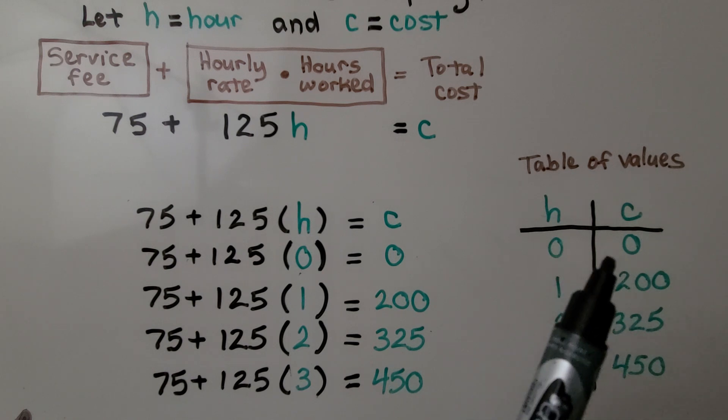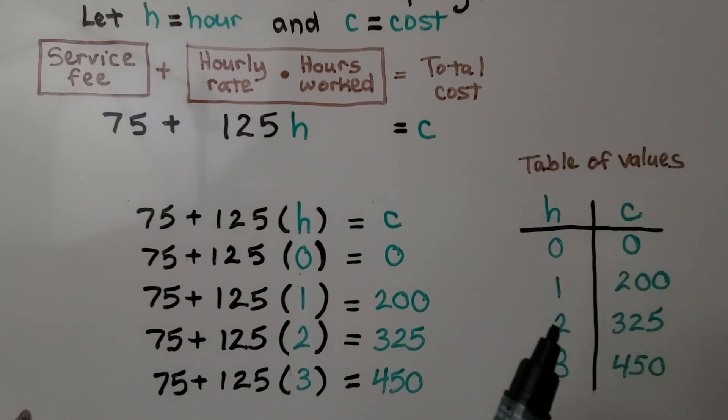If the hours are zero, the cost is zero. If the hours are one, the cost is 200. If the hours are two, the cost is 325. If the hours are three, the cost is 450. And we could keep going. We could make this table of values longer for four hours, five hours, and so on.